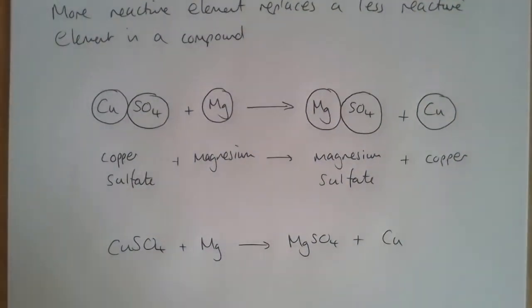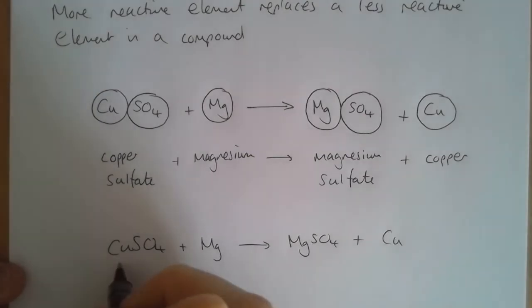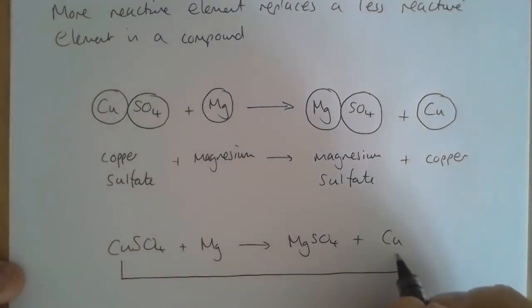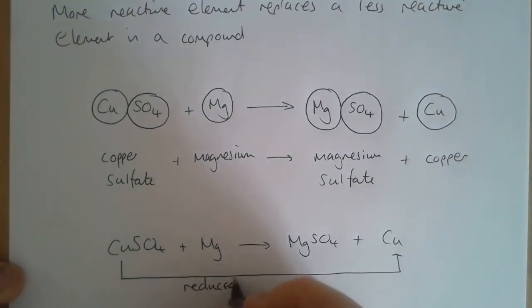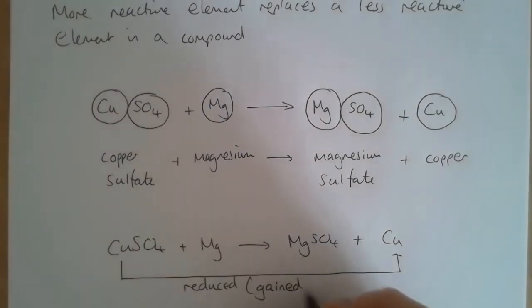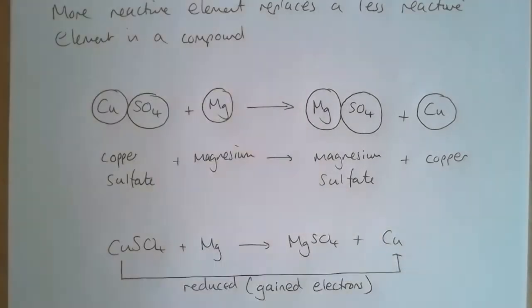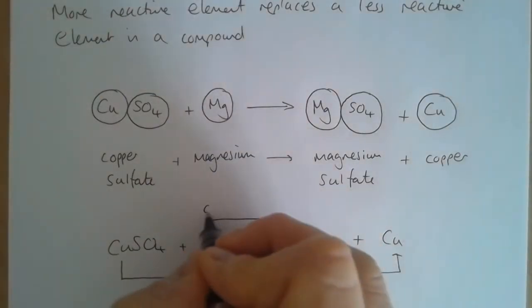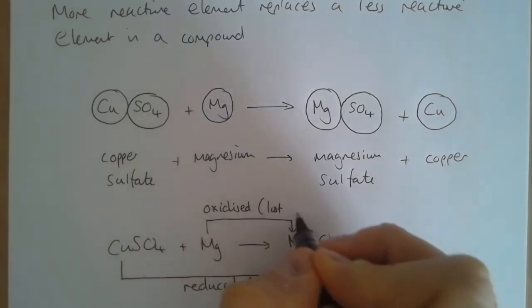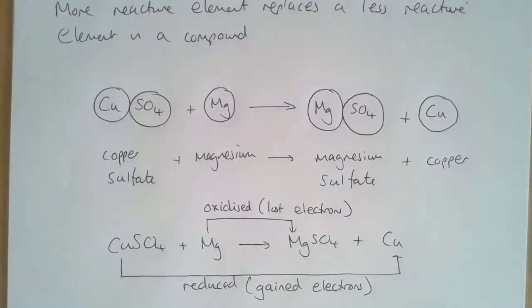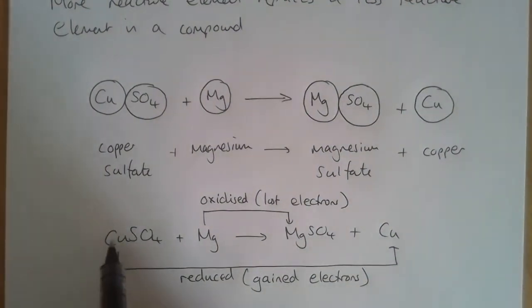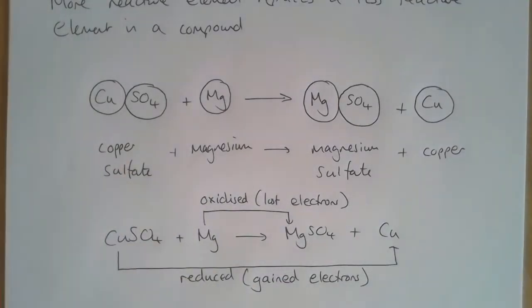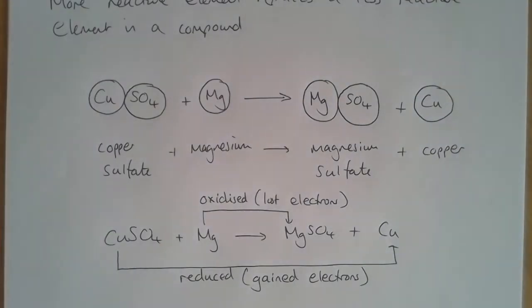We also need to be able to explain how we know whether something has been oxidized or reduced. Copper has been reduced — we can think of it as being reduced because it's lost the sulfate it was with, but also it has gained electrons. The magnesium has been oxidized, and to do that it has lost electrons. If copper has lost the compound it was in, it has been reduced; and because magnesium has gained a sulfate ion to make a new compound, it has been oxidized.